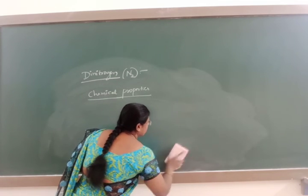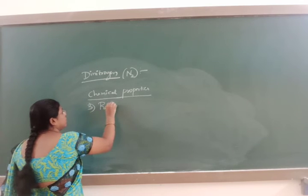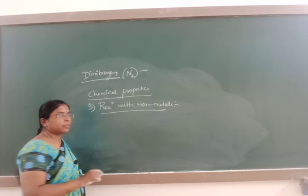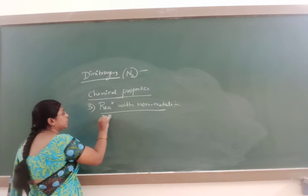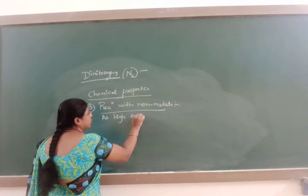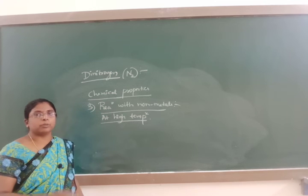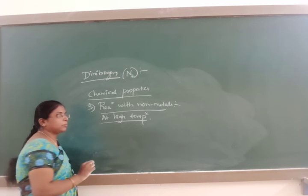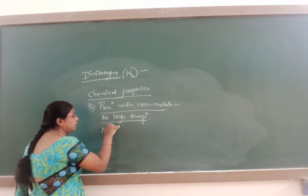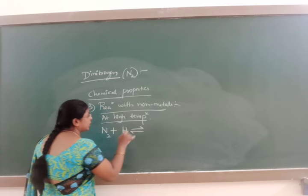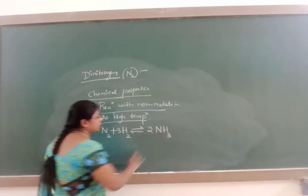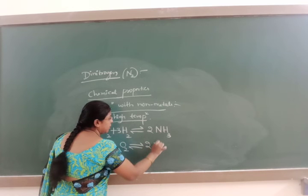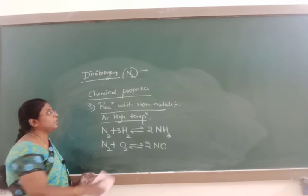The third chemical property is reaction with non-metals. Dinitrogen reacts with non-metals like oxygen and hydrogen, but only at high temperatures. At high temperature, dinitrogen directly reacts with hydrogen to form ammonia NH3, and directly reacts with oxygen to form NO, that is nitric oxide. These are some of the chemical properties of dinitrogen.